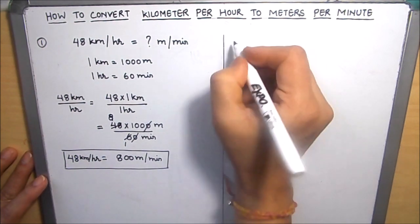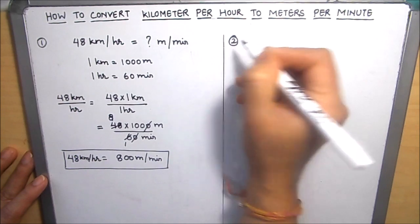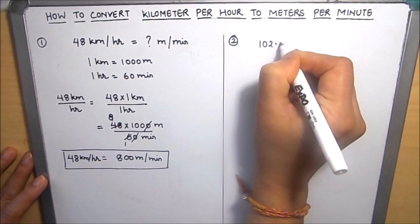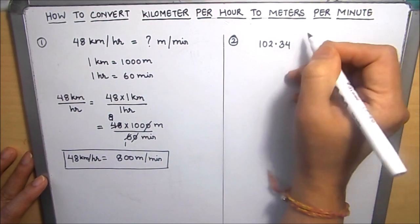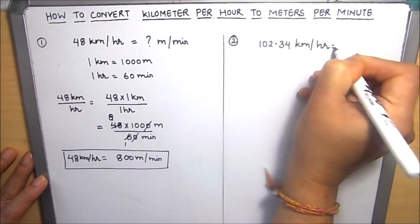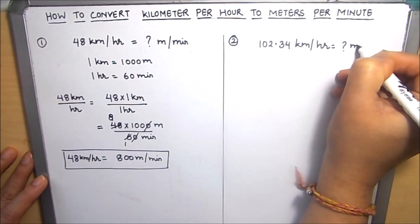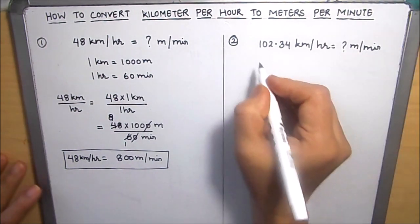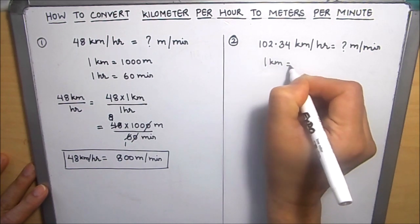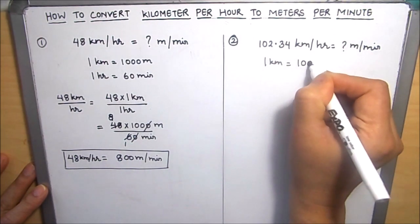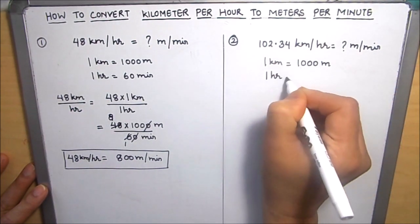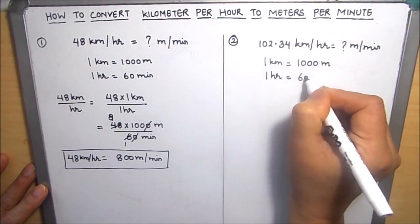Now let's take one more example. Here let's convert 102.34 kilometer per hour to meters per minute. Here too we should know two standard conversions: 1 kilometer is equal to 1000 meters, and 1 hour is equal to 60 minutes.